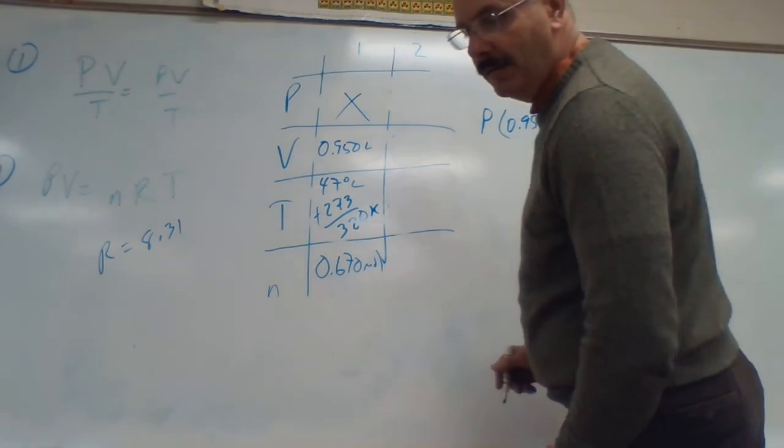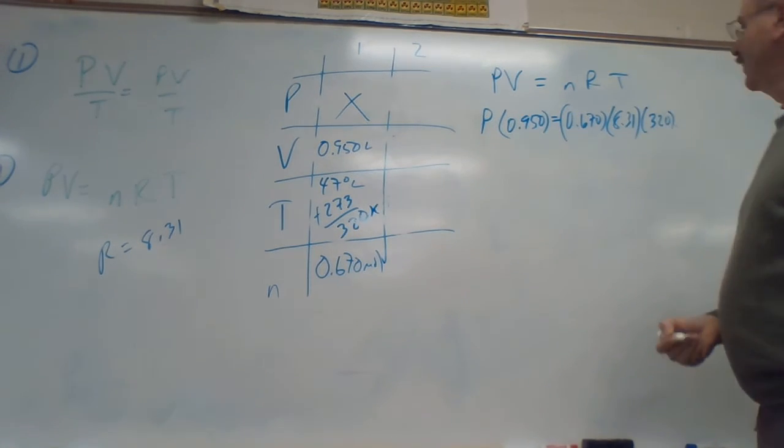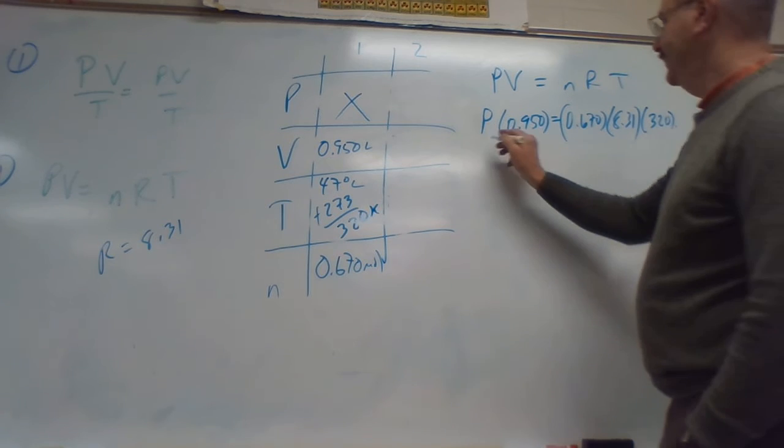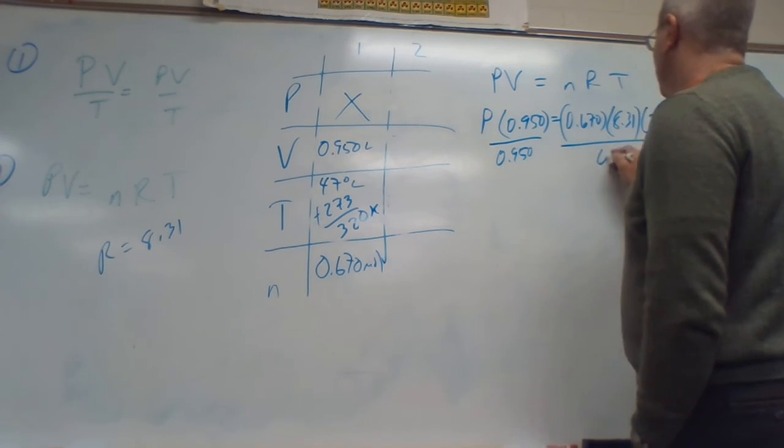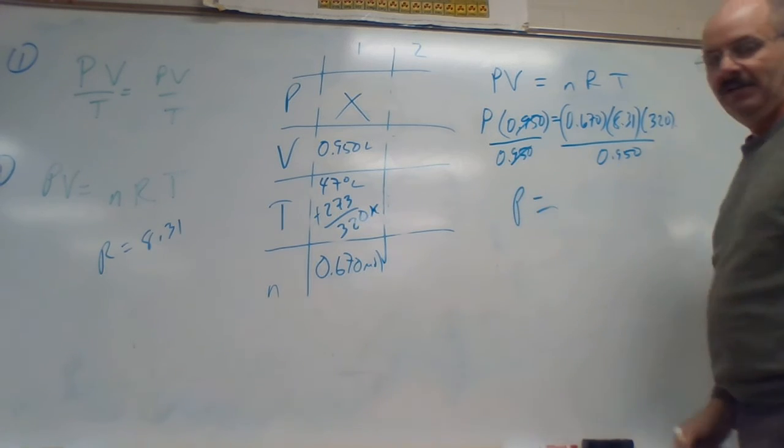Make sure I did that. Yep. Okay. So, my temperature is 320. All right, I've got to get pressure by itself. So, divide by 0.950. That lets me get rid of that. And P is all by itself.